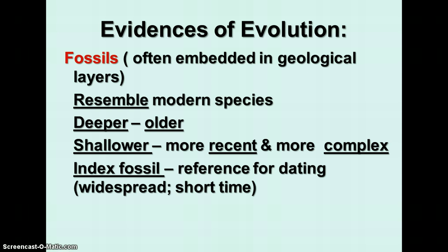There are also such things as index fossils. Index fossils are used as a way to date the relative ages of different layers of rock. An index fossil is something that lived for a relatively short time geologically speaking and was pretty widespread. When you find a layer of rock with this fossil in it, you know its approximate age — fossils above it are younger and ones below are older.